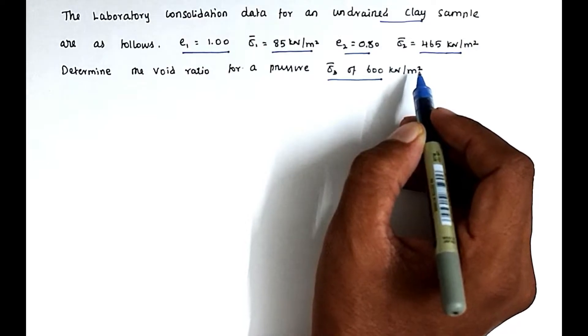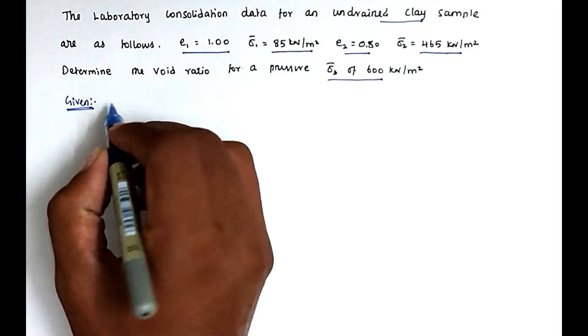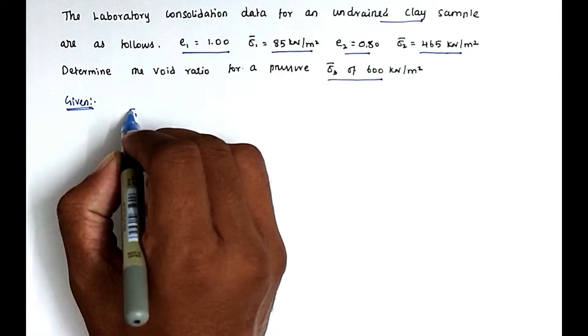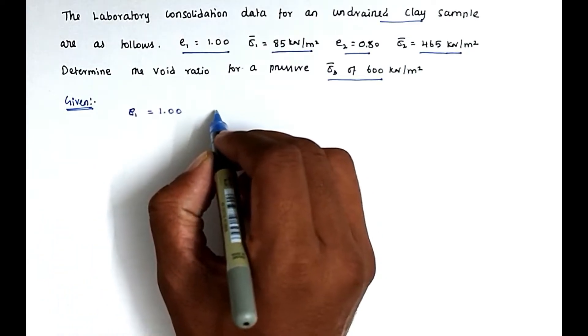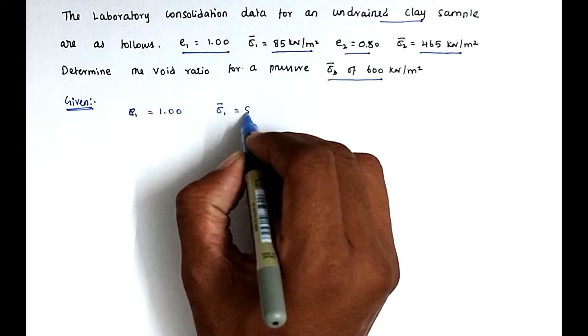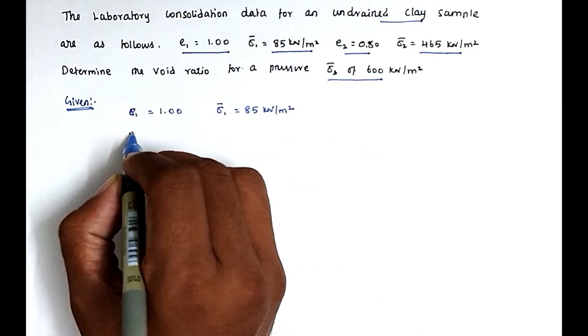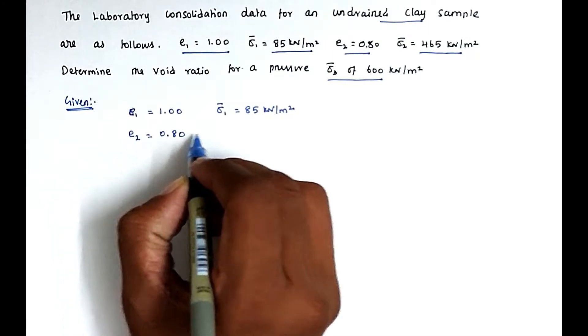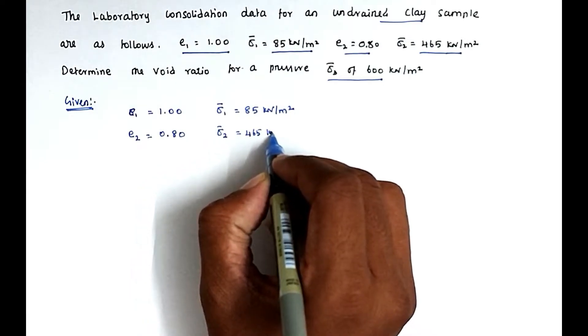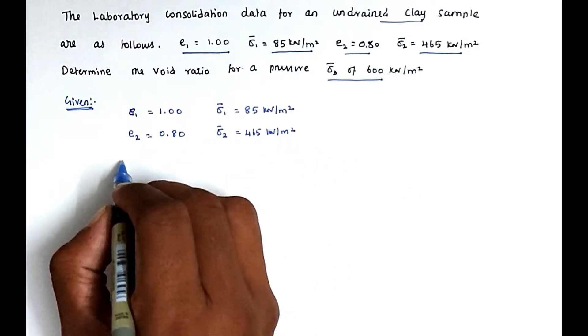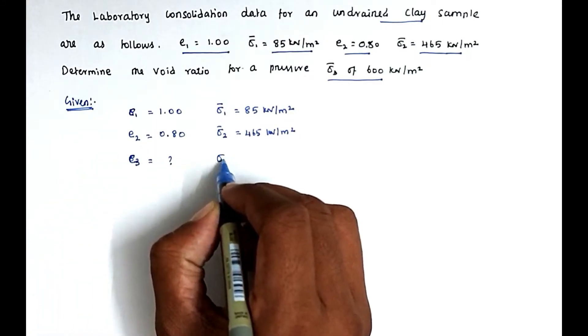The given values are: e1 equal to 1.00, for that sigma 1 dash equal to 85 kN per meter square. For e2 equal to 0.80, sigma 2 equal to 465 kN per meter square. Now the e3 we have to find out for the sigma 3 value of 600 kN per meter square.